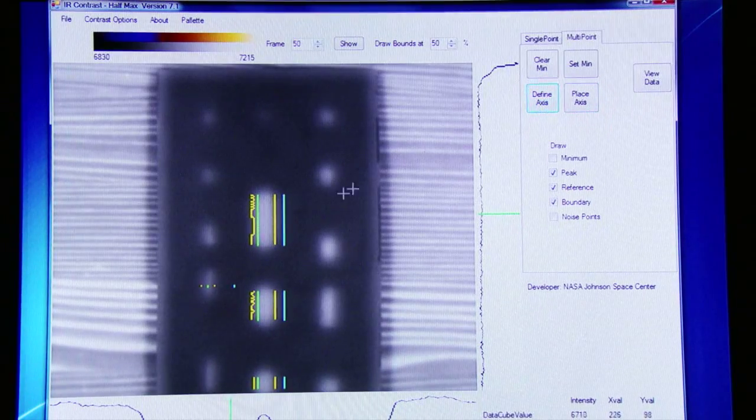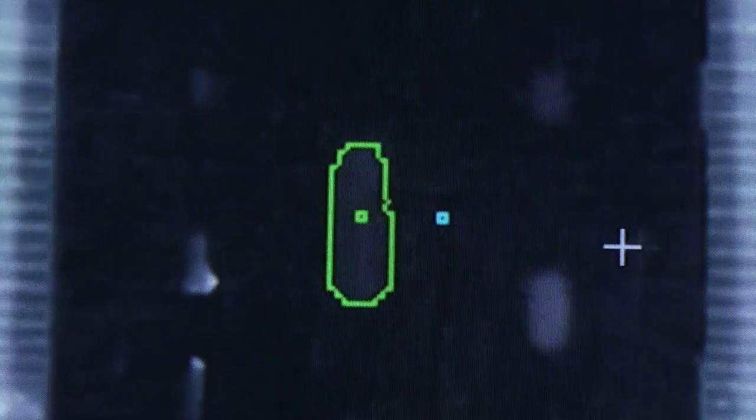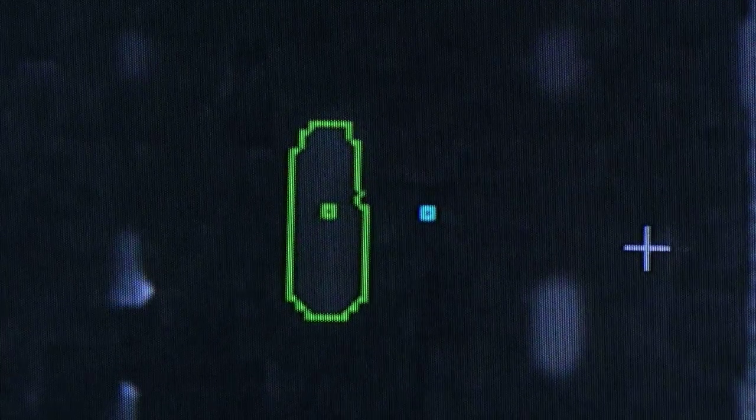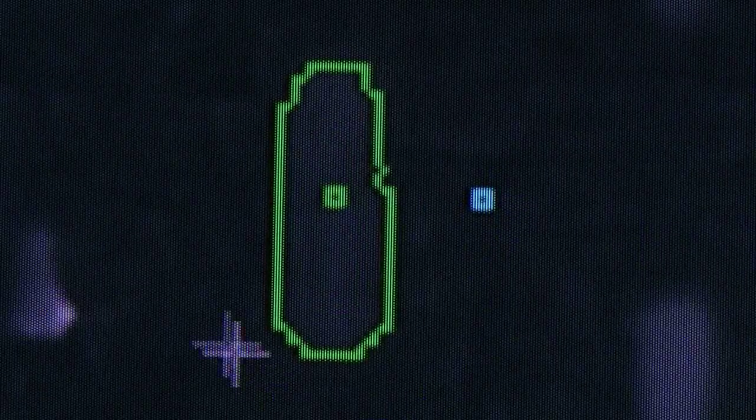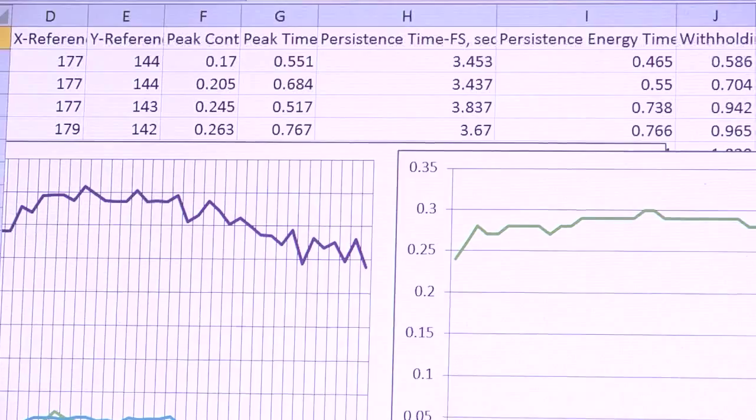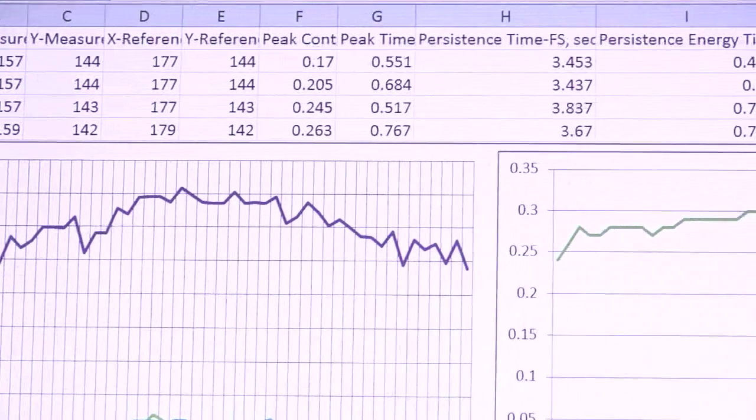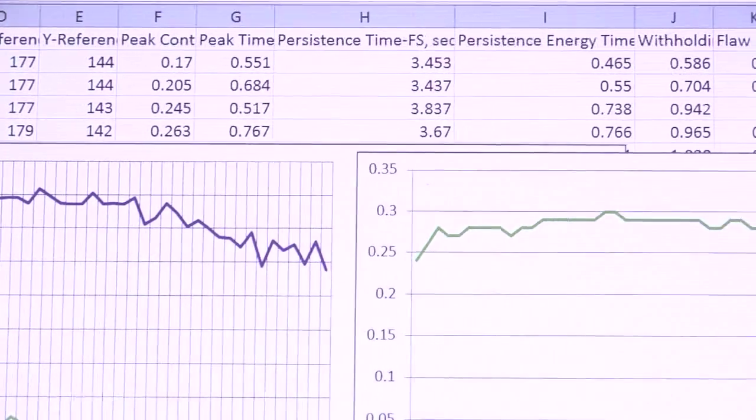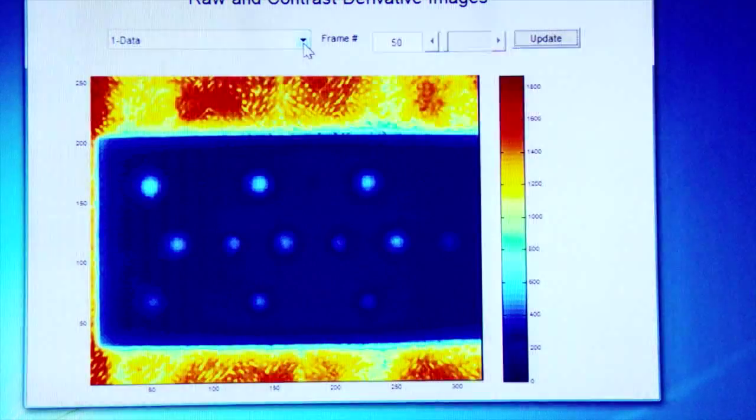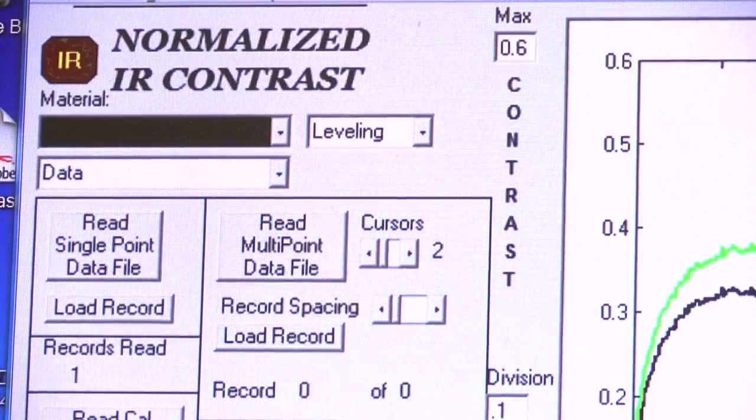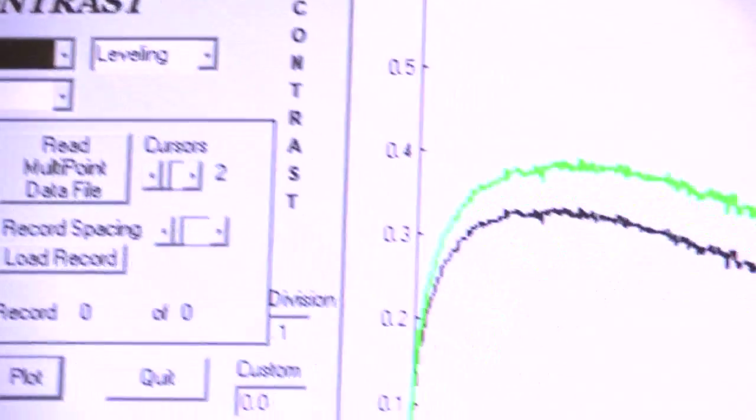This way you have a quantifiable, measurable signal response that correlates to the size of the flaw. You have a signal amplitude that can be measured very accurately, and you also have the peak of that amplitude time measured very accurately. Both of these relate to the size of the flaw as well as the depth of the flaw.